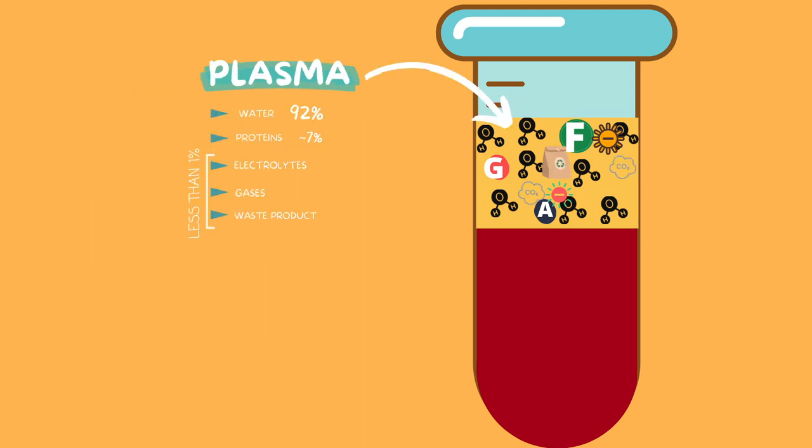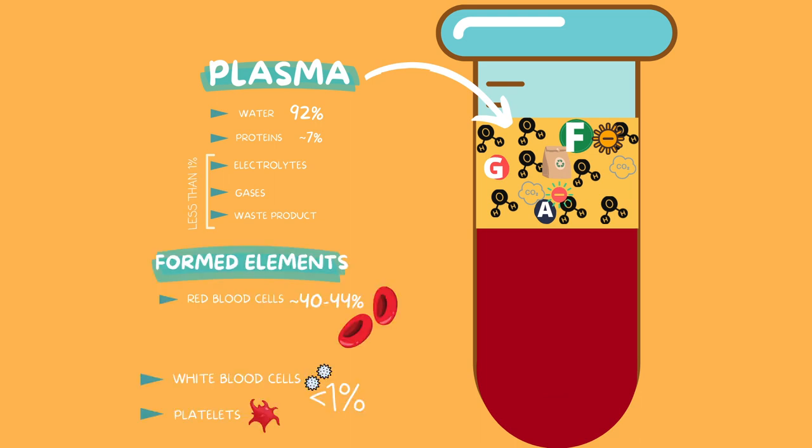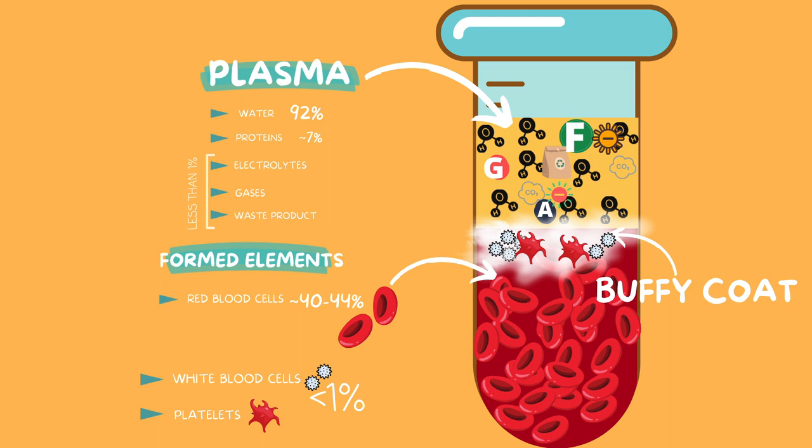So just to sum up: 55% of the blood is made out of plasma and 45% is made out of formed elements, 1% of which is the buffy coat, which consists of your white blood cells and your platelets.